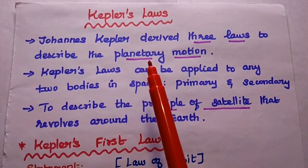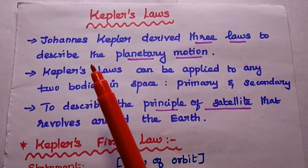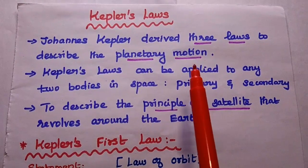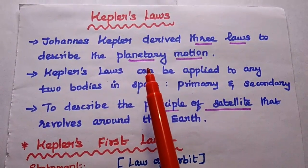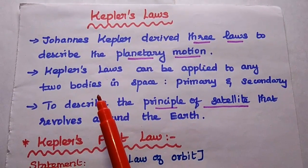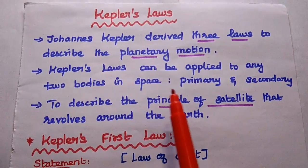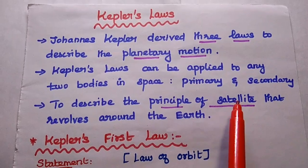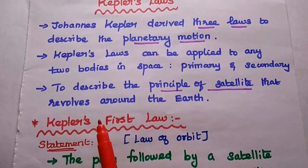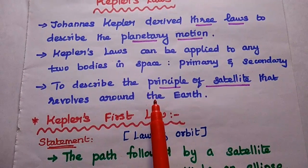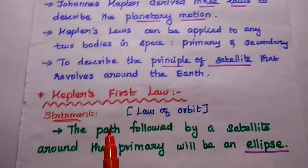Dear students, now we are going to discuss Kepler's laws in satellite communication. The German astronomer Johannes Kepler derived three laws which are mainly used to describe the motion of planets around the sun, simply planetary motion. In satellite communication, Kepler's laws can be applied to any two bodies in space. We can consider the primary body as the Earth and the secondary body as the satellite, that is an artificial satellite. These Kepler's laws are mainly used to describe the principle of a satellite that revolves around the Earth. There are three Kepler's laws.